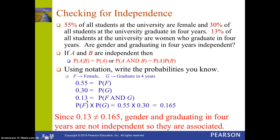Since those two numbers don't equal each other, gender and graduating in four years are NOT independent — they're somehow associated. This means that if you know a student is female, the probability of graduating in four years will be different than if you know the student is male.